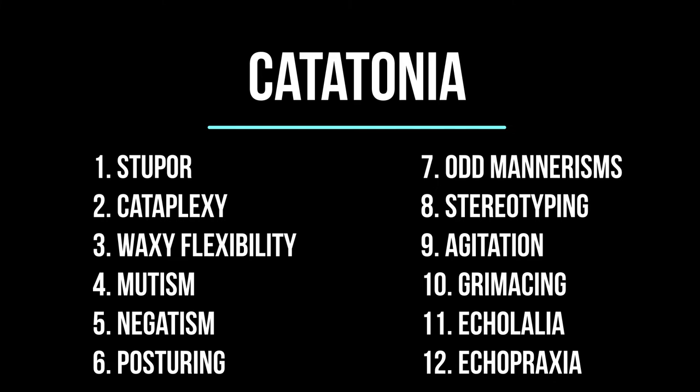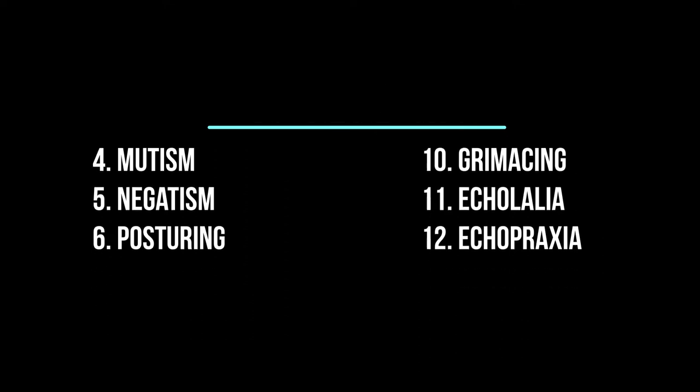Number nine is agitation — not because of external stimuli, but just a basic overall kind of moody agitation. Number ten is grimacing, just not being happy, with a frown on your face all the time. Number eleven is echolalia, which means mimicking someone else's speech. And then number twelve is echopraxia, mimicking someone else's movements.